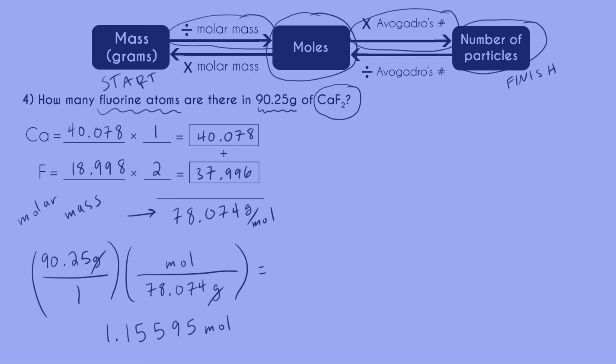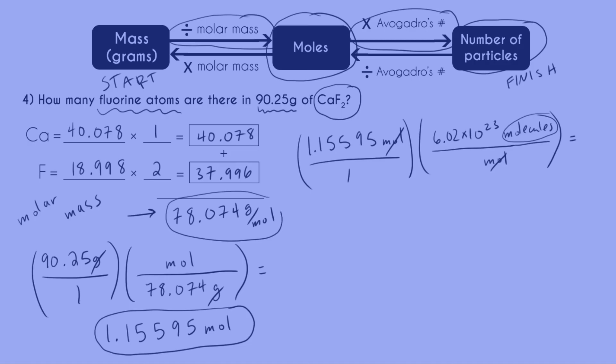And without caring about sig figs, I get 1.15595 mole. Now I can take my halfway point answer and do my next conversion, which is to multiply by Avogadro's number. So I can see that my moles will cancel out. And my units right now is going to be in molecules. And the reason it's still molecules is because I used the molar mass of my entire molecule. I calculated the molar mass of calcium fluoride. So that's still what I'm dealing with. I'm going to go ahead and find the number of molecules before I deal with the fact that I was asked to find how many fluorine atoms we have. So my number of molecules is 6.9589 times 10 to the 23rd.